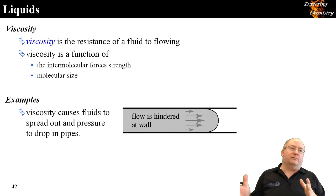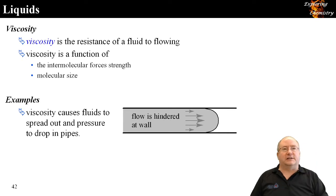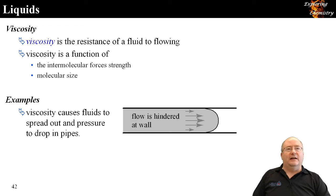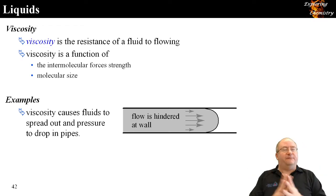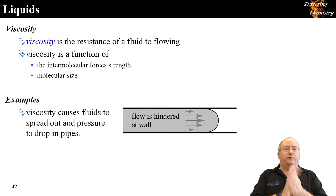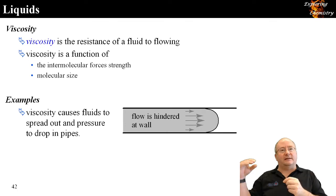Molecular size also plays a role — larger molecular entities are more resistant to flow. Viscosity causes fluids to spread out and pressure to drop in pipes. In the oil and gas sector, this is a major problem when shipping different fuels through the same pipe. At the interface between diesel and gasoline, you see a lot of mixing or fingering of the liquids into each other, as some are held back while the center moves forward.